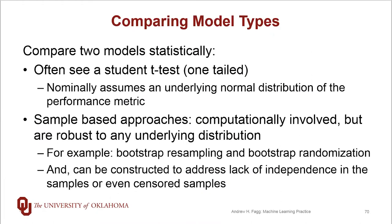Coming back to comparing individual models — one model versus another — it's often the case that we use a Student t-test. If your alternative hypothesis is that one specific model is better than the other, then you want to use a one-tailed test; but if you are just trying to figure out that they are different, then it is a two-tailed test. Remember that the Student t-test makes an assumption that the underlying distribution of the performance metrics is a normal distribution. The t-test is robust to deviations from that assumption, but if you have something very different than a normal distribution, then you should really proceed with caution.